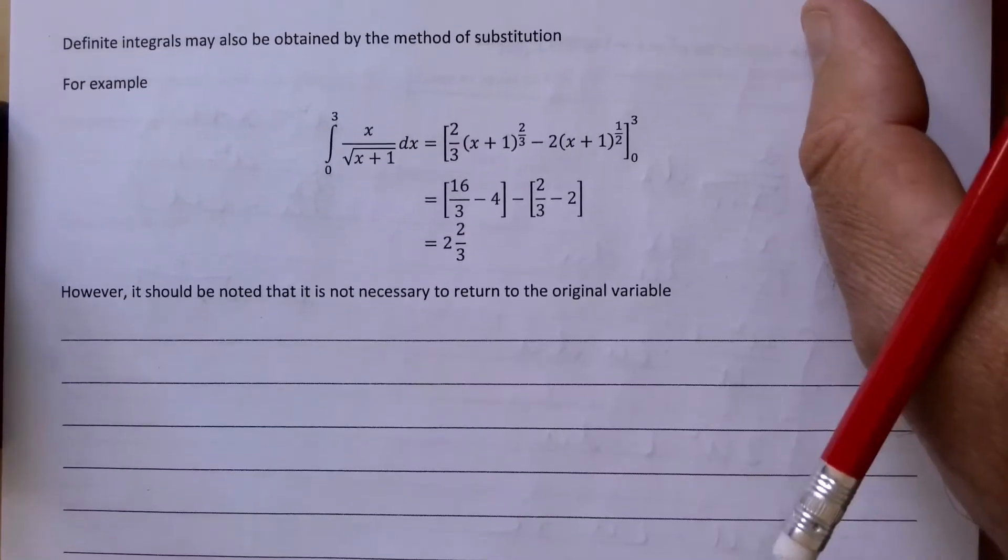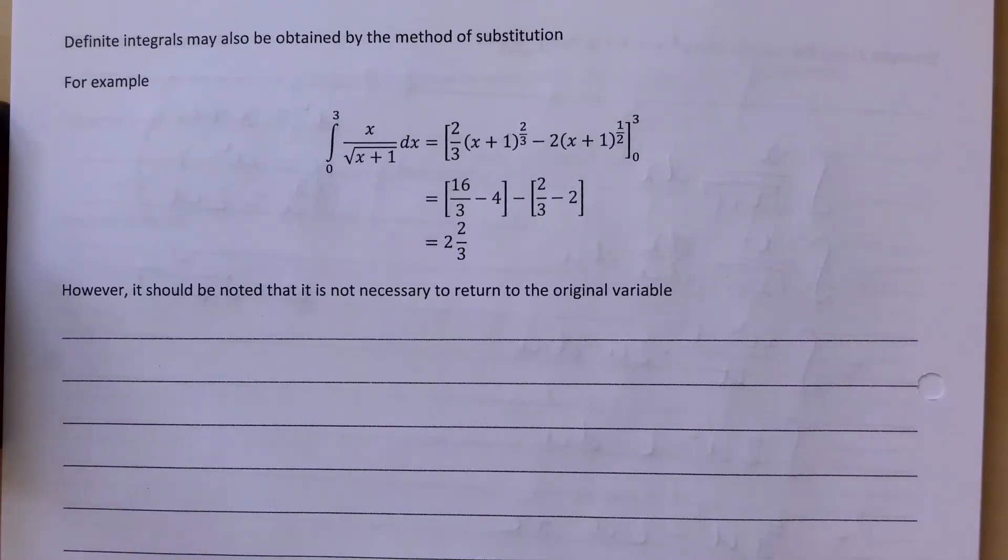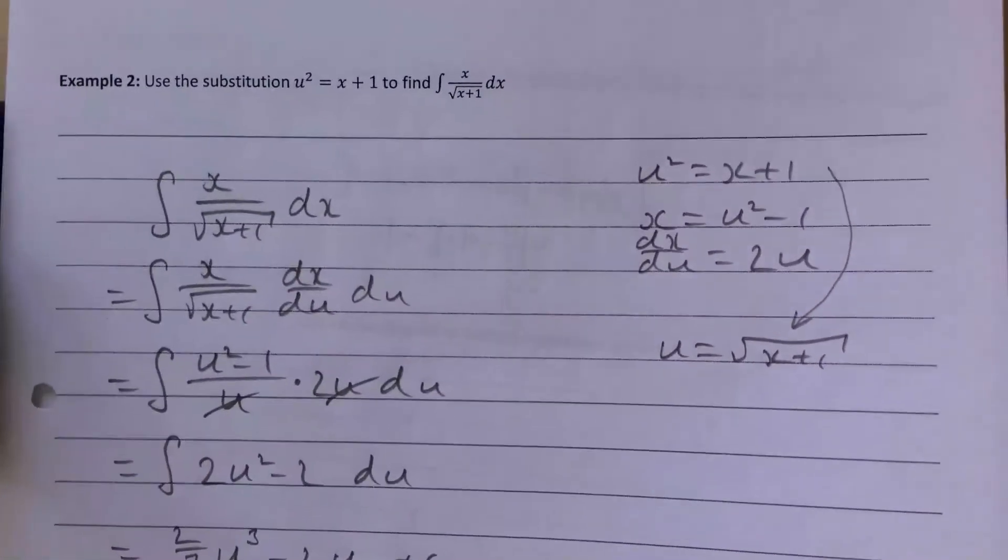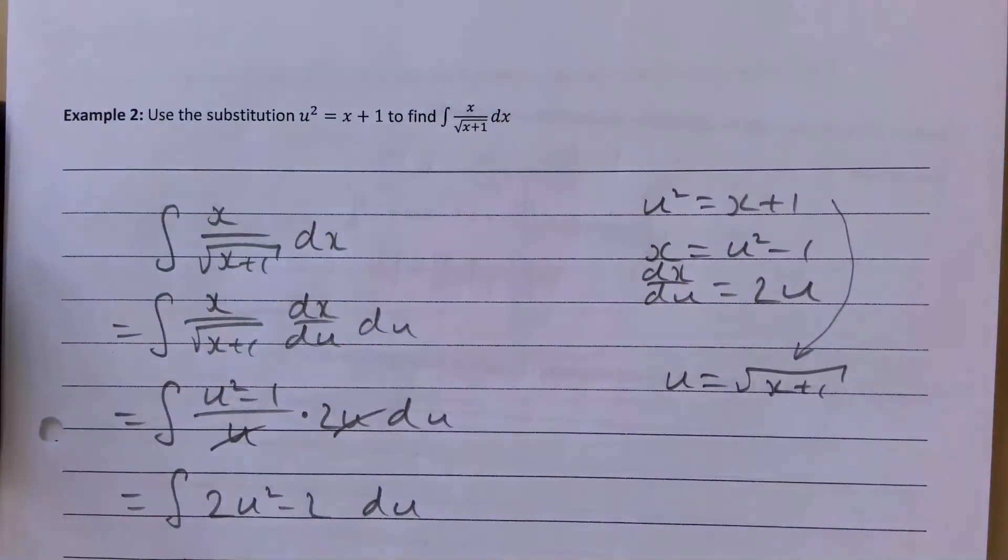This is A2 Pure and we're doing integration by substitution, unit 4. This is the follow-on from the previous example where we were finding the integral of x over the square root of x plus 1, and this is just to show that you can use indefinite integration to work out these values as well.